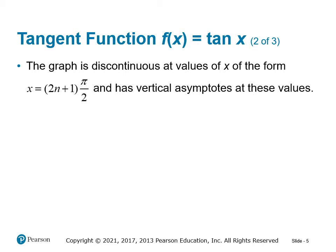Some specifics about the tangent function: the graph is discontinuous at values of the form (2n+1) times pi over 2 — these are odd multipliers of pi over 2, such as pi over 2, 3pi over 2, etc. — giving vertical asymptotes at those values. Its x-intercepts are of the form n*pi, because that's where sine equals zero, making the numerator of the fraction zero.